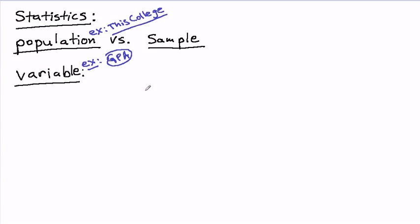So, a sample is simply defined as a part of a population. Now, if we're careful, we don't want to just take any part of the population. If I'm studying the GPA of students at this school and I'm interested in learning about the average GPA at the school, for example,